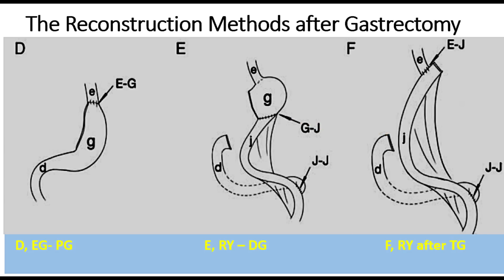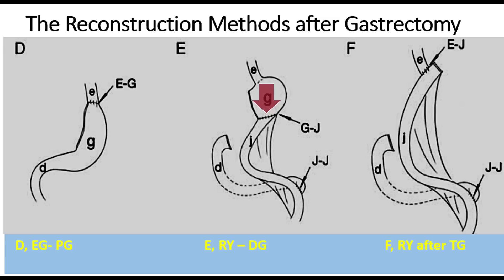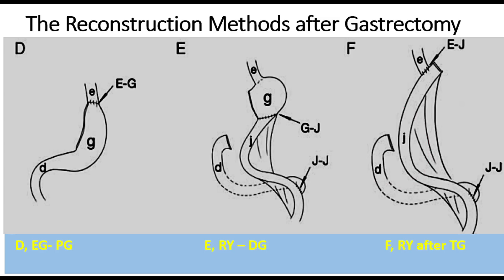Other options after gastrectomy are: Fig D shows that after proximal gastrectomy we can do esophagogastrostomy, pulling the remnant stomach to the esophagus. Alternatively, it can be in the form of Roux-en-Y, where we bring the Roux loop and do gastrojejunostomy and jejunojejunostomy, or Roux-en-Y after total gastrectomy as esophagojejunostomy and jejunojejunostomy. The difference between DTR and Roux-en-Y is that in Roux-en-Y we do not perform anastomosis with the duodenum or the remnant stomach.